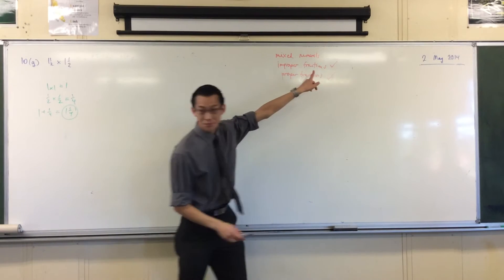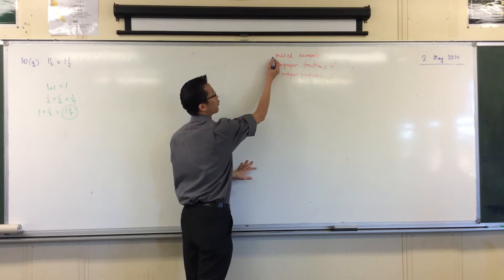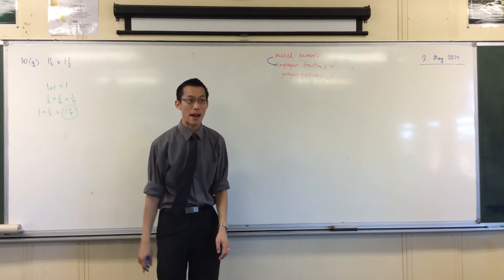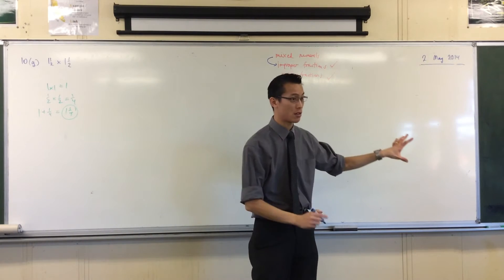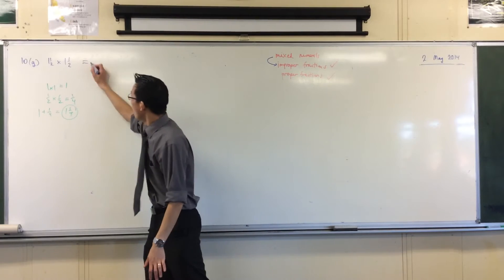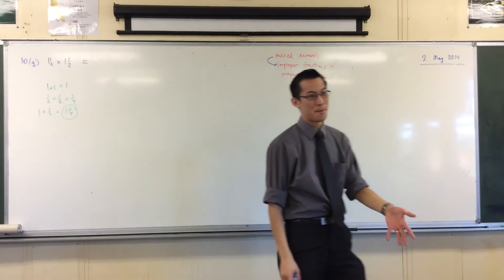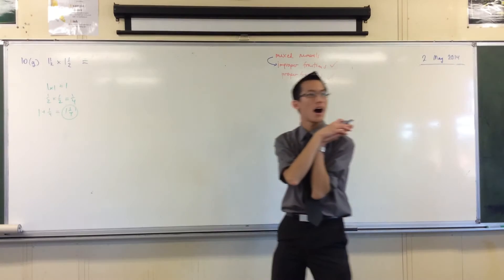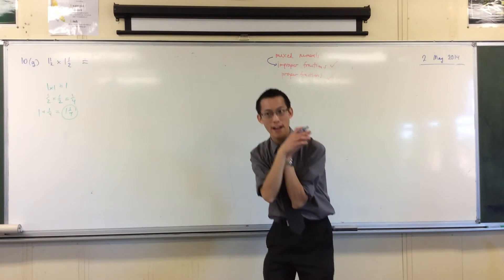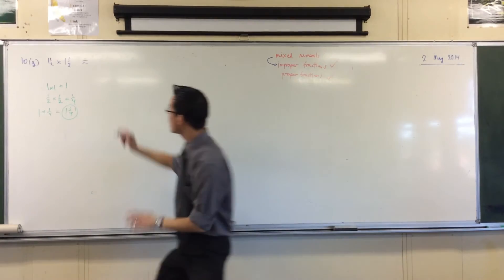Well, what I'm going to do, as I said before, I'm going to convert. I'm going to go from a mixed numeral into an improper fraction, and then I can just multiply across. So let's watch. 1 and a half. It's nice that they give us the same number, because once we do one, we've got both of them. What's 1 and a half as an improper fraction? Yeah, Naomi. 3 over 2. Perfect.